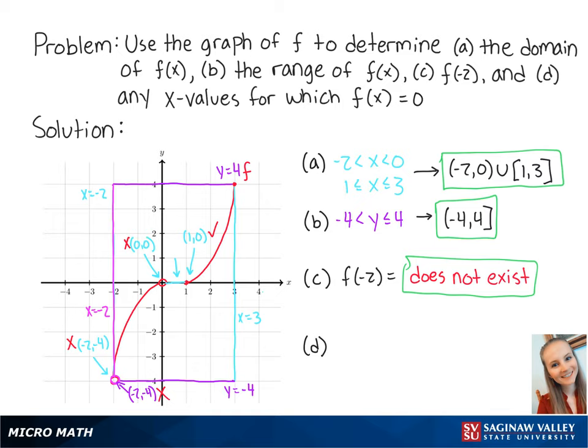For letter d, we want to find any x values for which f of x equals 0. Looking at the graph, we can see that when y is 0, x is 1, but x is not 0 because the point (0, 0) does not exist. So the answer for letter d is x equals 1.